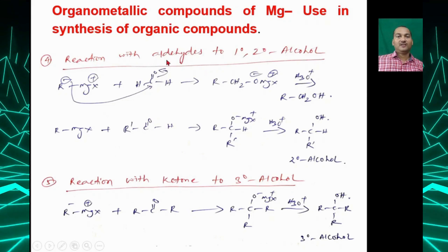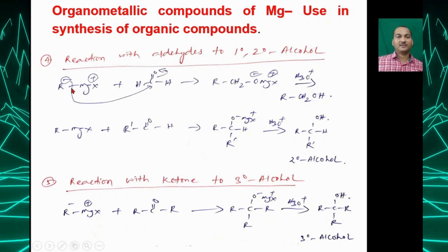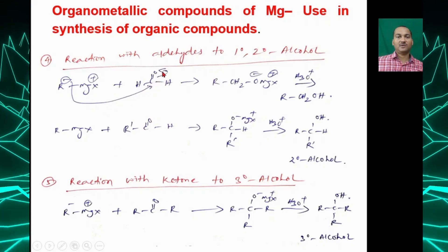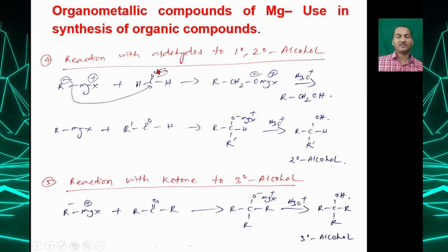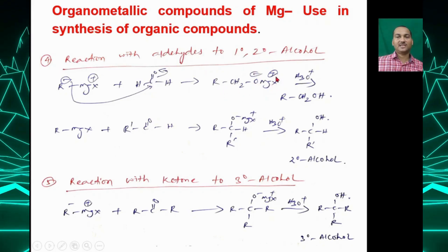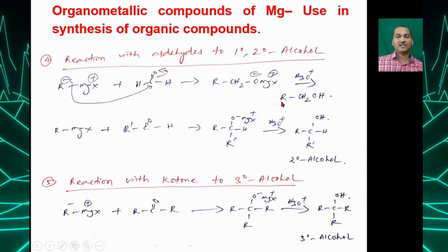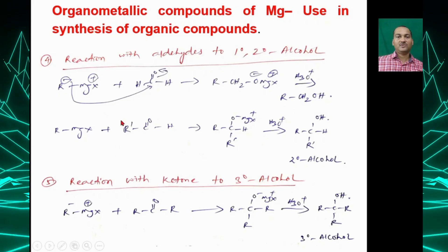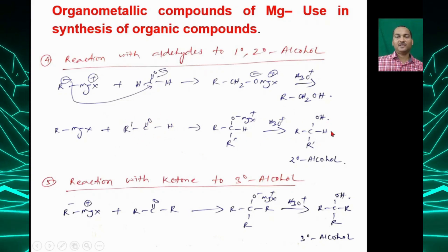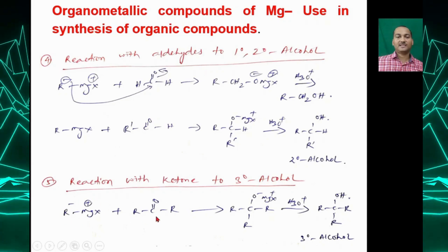In the reaction with an aldehyde, RMgX — where R⁻ attacks the carbonyl carbon and the double bond breaks on oxygen — gives R-CH₂-O⁻MgX⁺. Upon hydrolysis, you get a primary alcohol (from formaldehyde) or a secondary alcohol from other aldehydes.